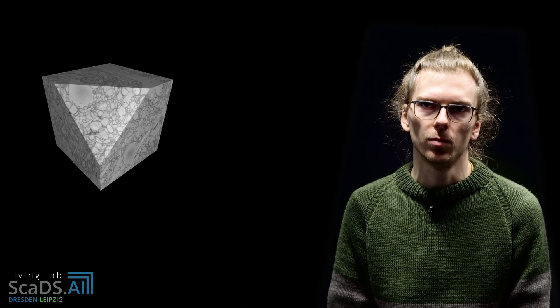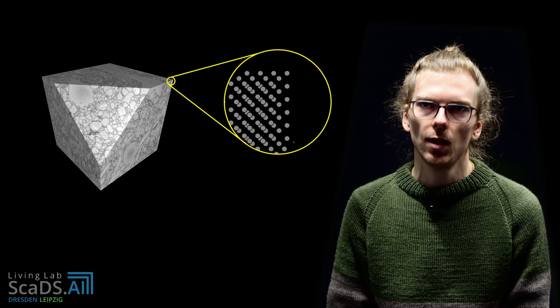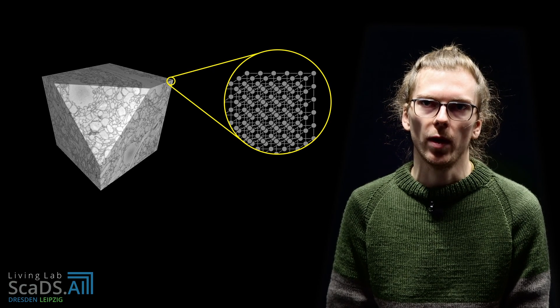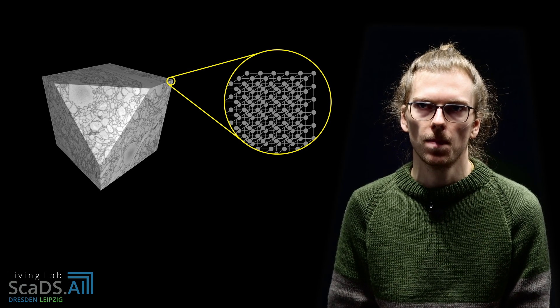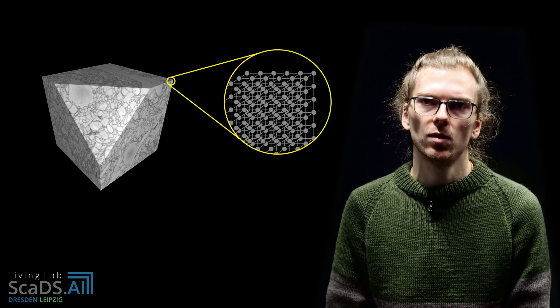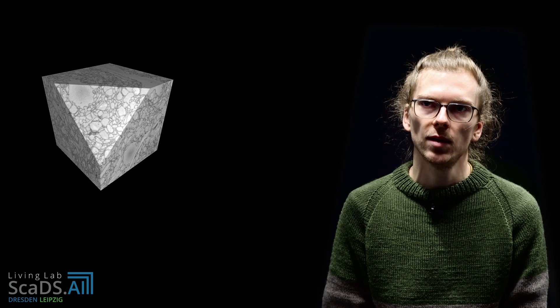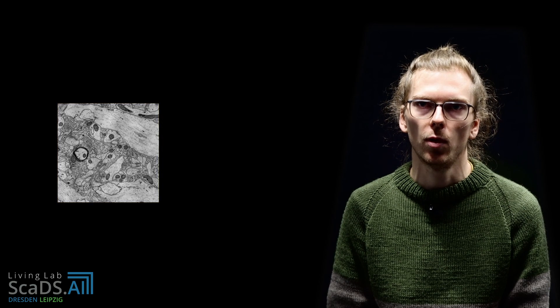You might ask, what graph theory has to do with images? Well, consider this 3D volume image. If we zoom in all the way until we see the individual pixels, we can visualize the image as a collection of pixels where neighboring pixels are connected. This network of connected pixels is what we call a grid graph. Now the task of segmenting the image is equivalent to cutting that graph into multiple components.